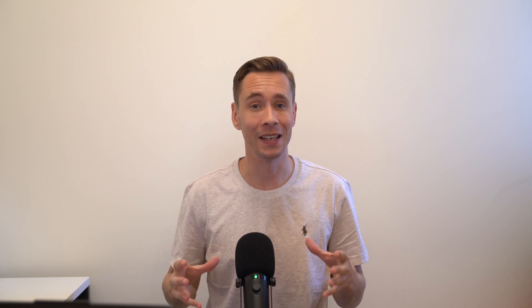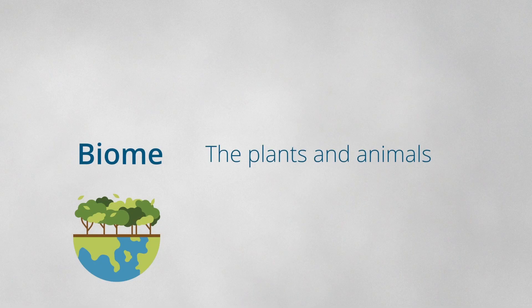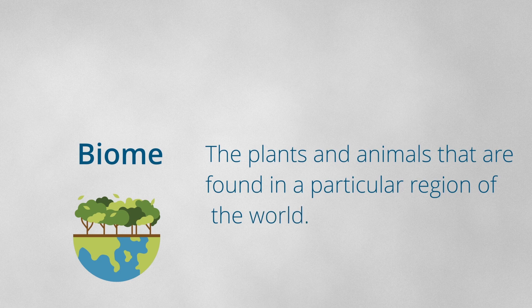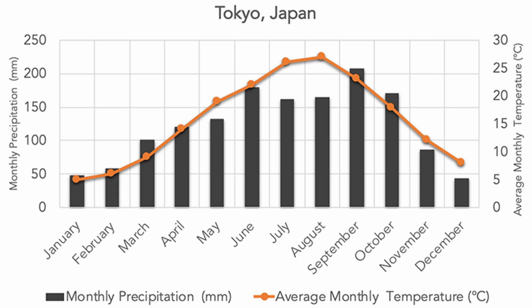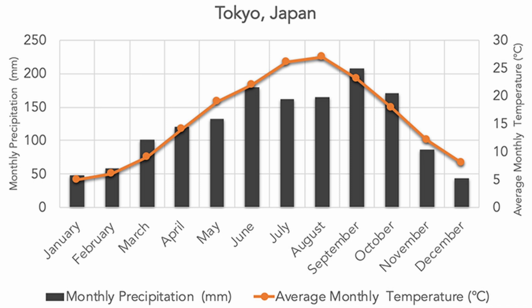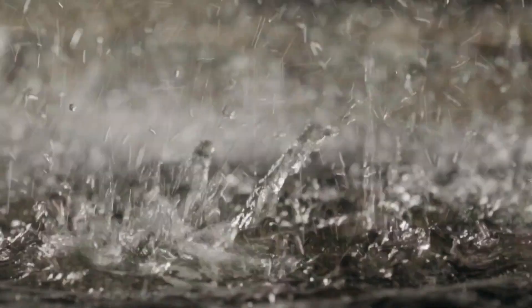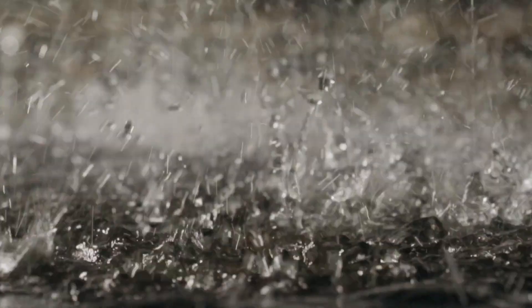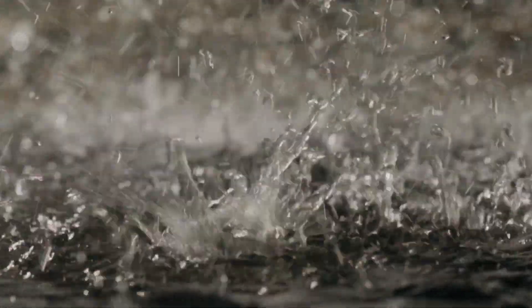Let's take a look at exactly what a biome is. A biome is the plants and animals that are found in a particular region in the world. Annual patterns of temperature and precipitation represent a region's climate, which is the average weather that occurs in a given region over a long period of time, typically over several decades. We can contrast this with weather, which is the short-term conditions of the atmosphere in the local area.